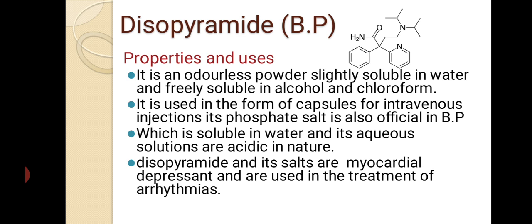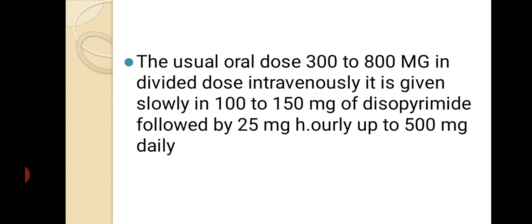Disopyramide and its salts are myocardial depressants and are used in the treatment of arrhythmia. It is used in the form of capsules and intravenously. Its usual dose is 300 to 800 mg in divided doses. Intravenously, 100 to 150 mg of Disopyramide is given slowly, followed by 25 mg, up to 500 mg.